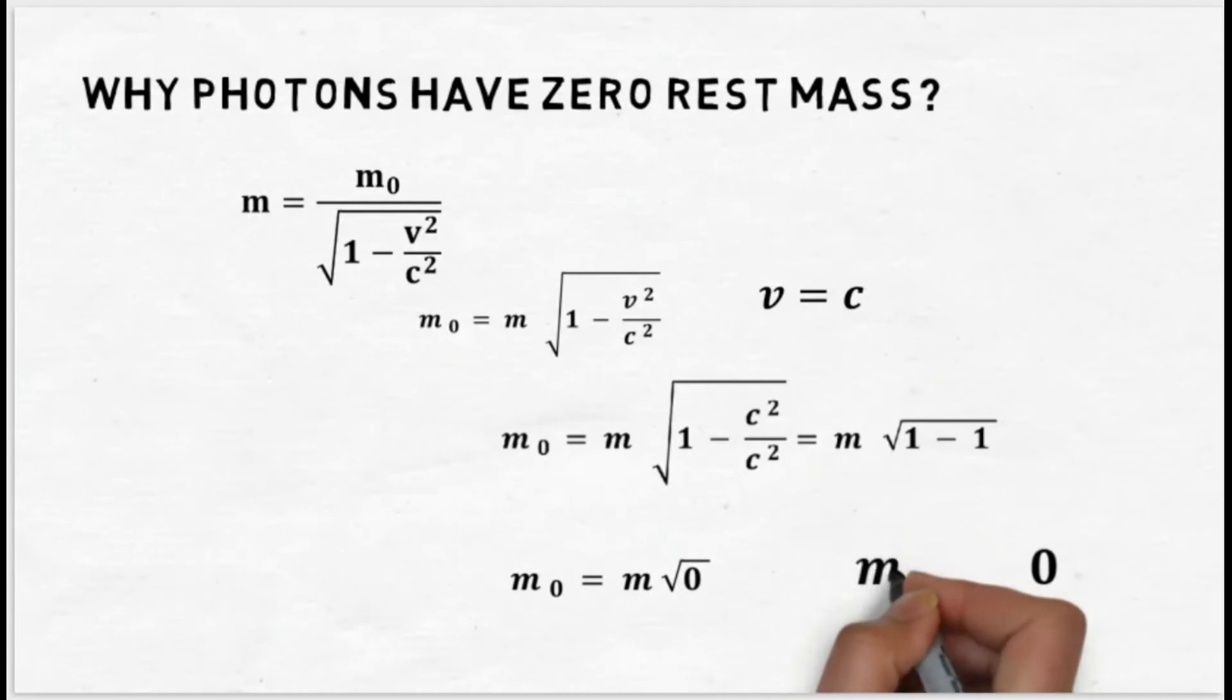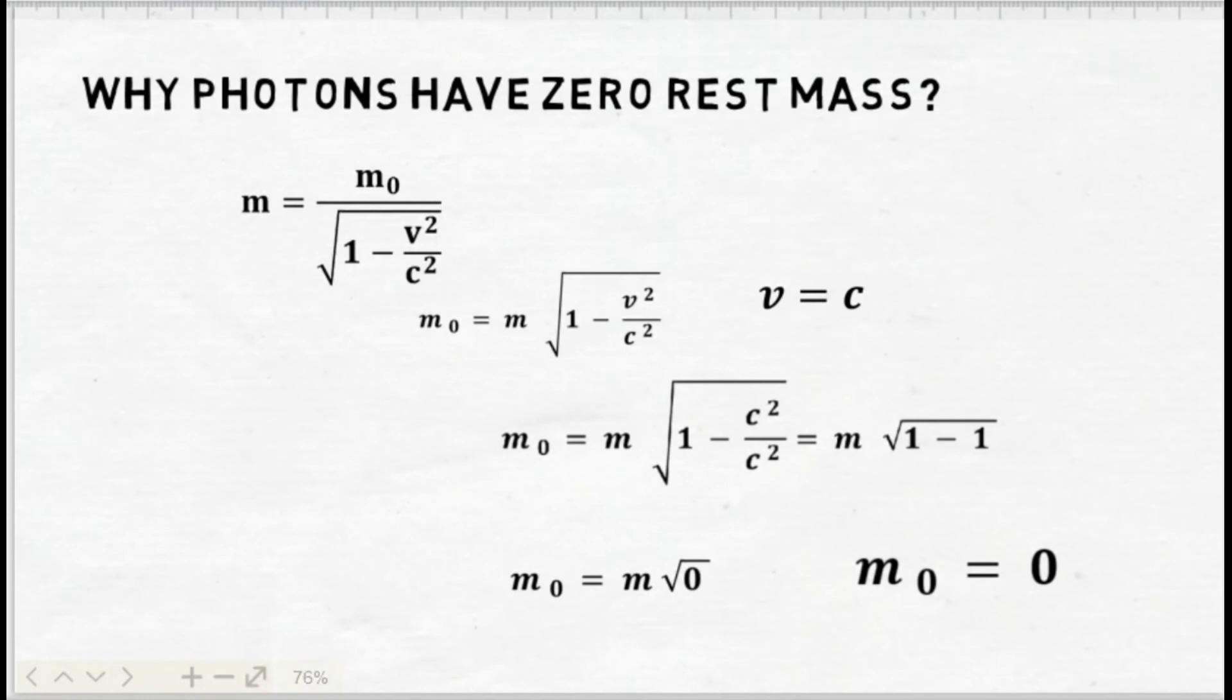Now anything when multiplied with 0 will become 0. So we will have the rest mass is equal to 0 and this is why the rest mass of photons is considered to be 0 and they are considered as a massless particle at rest.